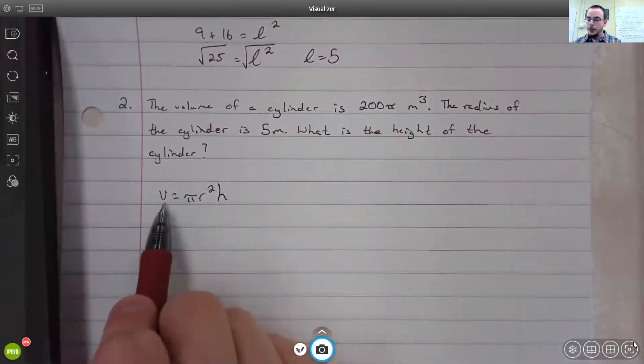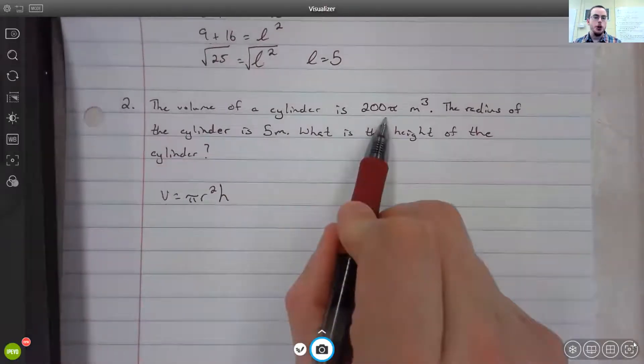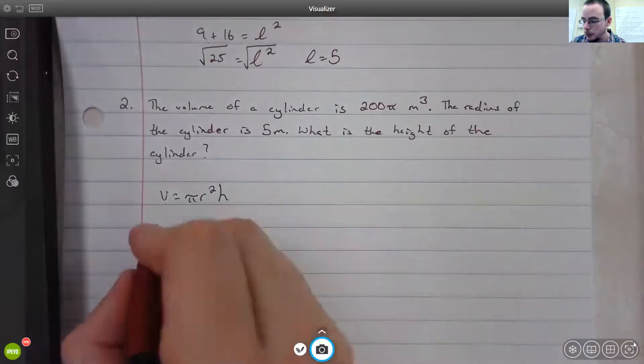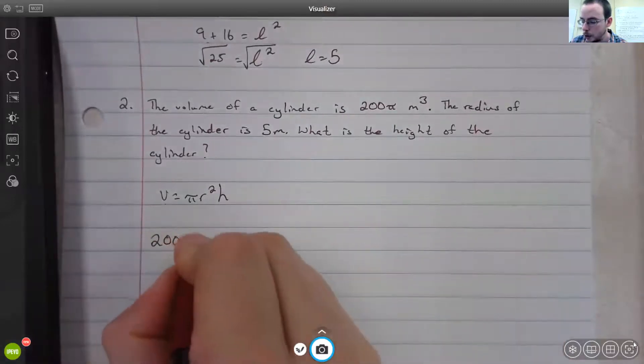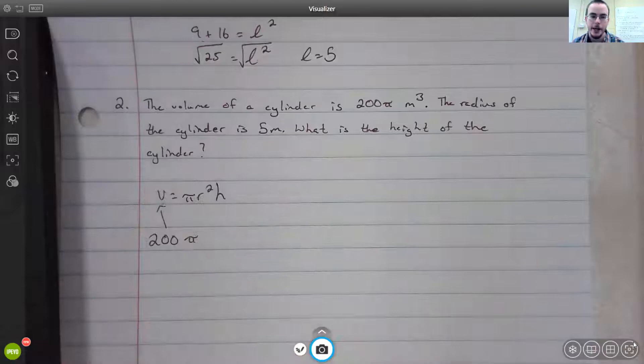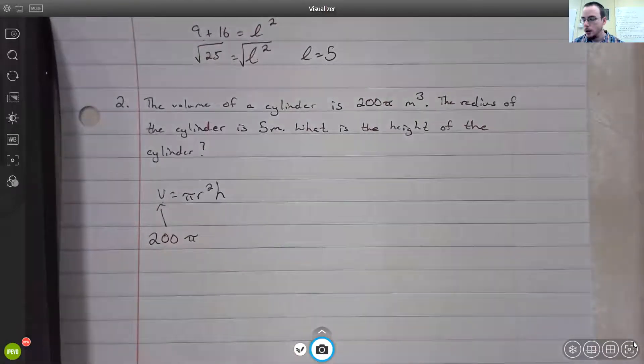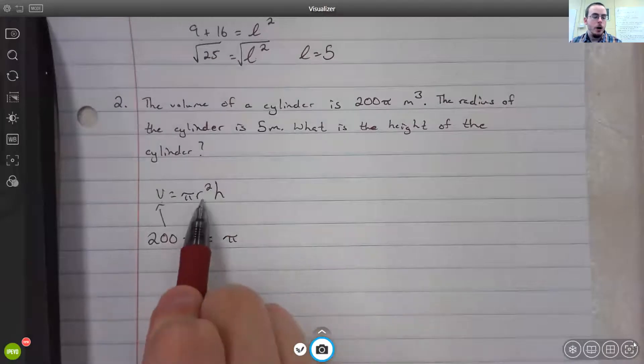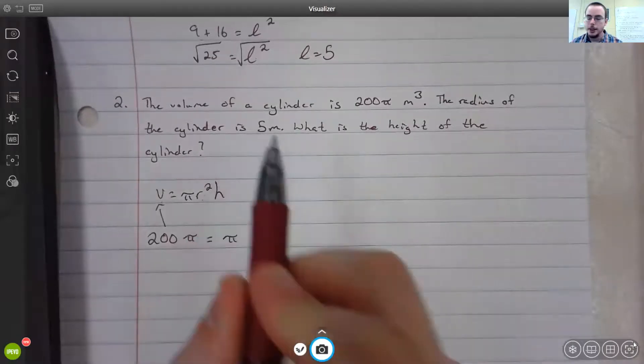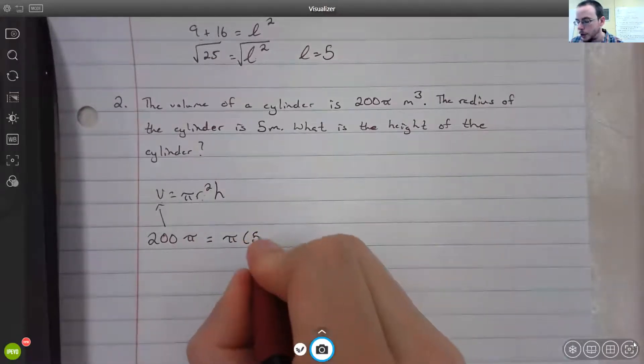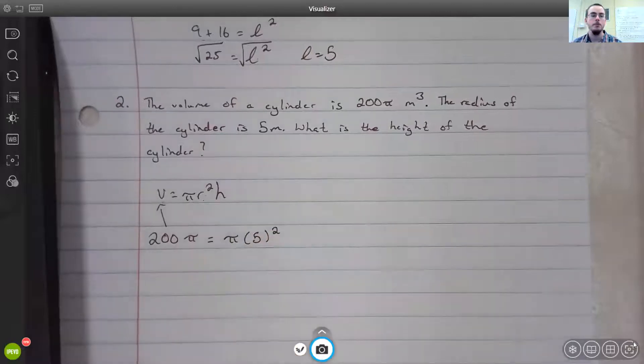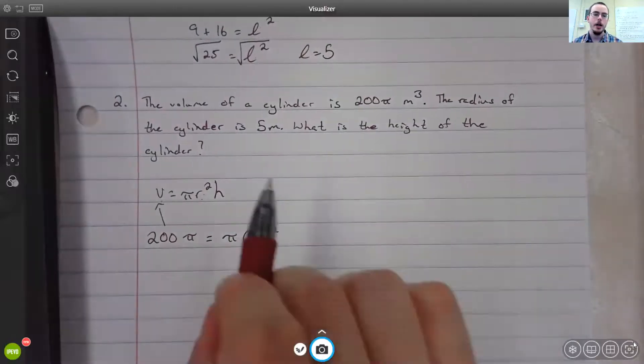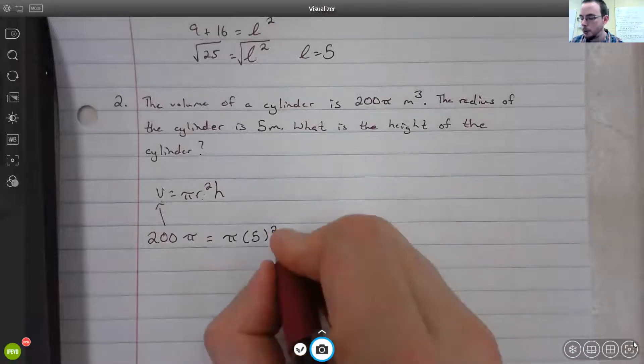It tells us that the volume is 200π meters cubed, so we're going to plug in 200π for V. That equals π r, our radius is 5, so in parentheses we're going to put 5², and we don't know what the height is because that's what we're looking for, so we put the h there.